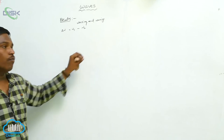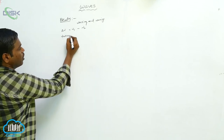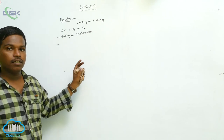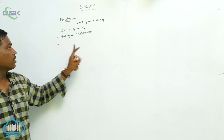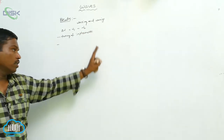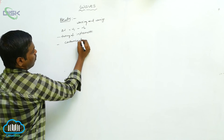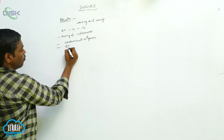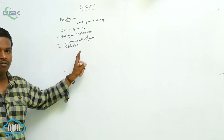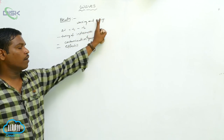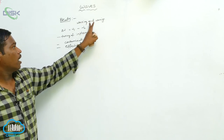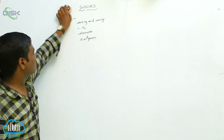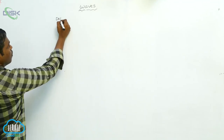Beats have practical applications. We can tune musical instruments using beats frequency. In mines, contamination of gases can be detected by the production of beats. In cinematography, beats are used for producing special sound effects. Simply, beats means the waxing and waning of amplitude of a wave, and the beat frequency is Δν = ν₁ − ν₂.